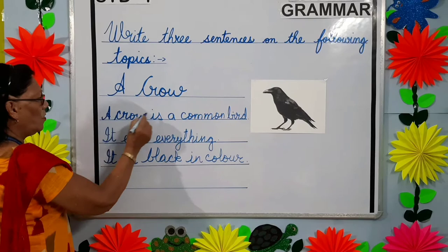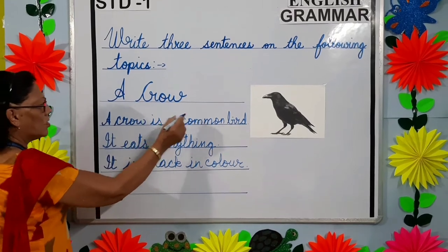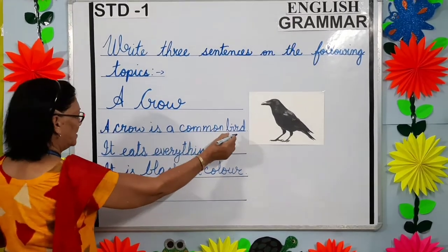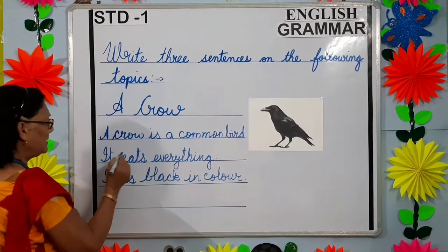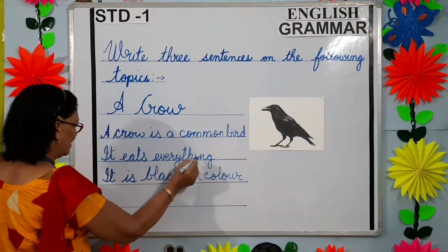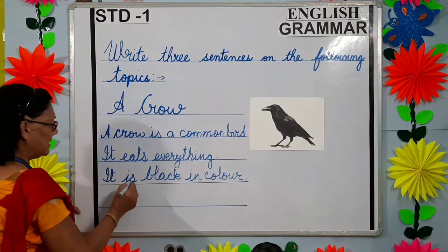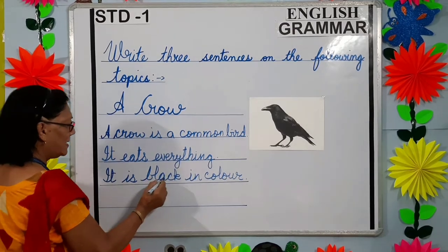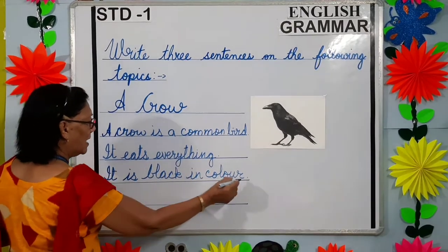A crow is a common bird. It eats everything. It is black in color.